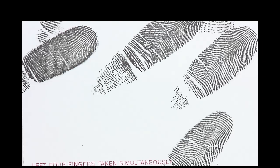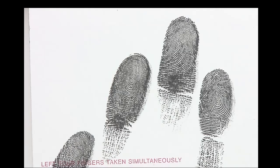Do you see any radial loops here? These three are in the same direction, and this one is going in the opposite direction — therefore, this is your radial. Do you see any radials here? This is the left hand. You should recognize this as being a loop slanting towards the little finger. The remaining patterns are whorls.